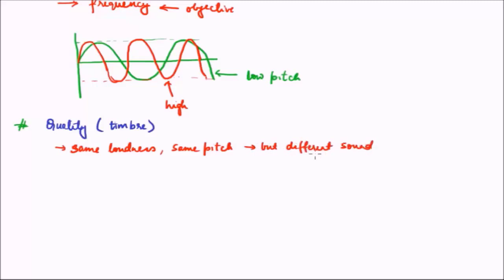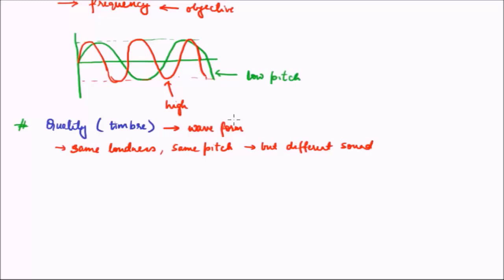The property that defines this difference is known as quality. Quality of a musical sound depends on what is known as the waveform of the sound. So this is a property of the waveform — just as loudness was a property of intensity and pitch was a property of frequency, quality of a sound is a property of the waveform of the sound.